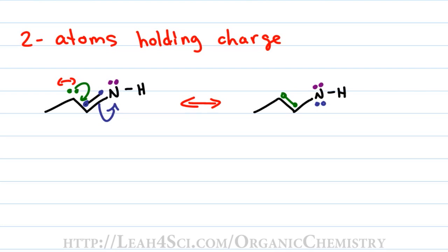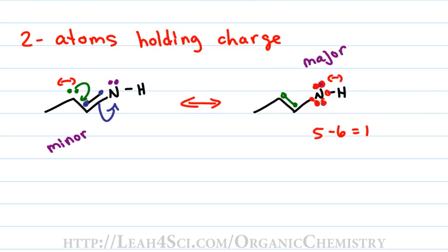Nitrogen has its bonds and electrons clearly visible, so we'll use the formal charge trick of 'should minus has.' Nitrogen should have five valence electrons; directly attached we have six. Five minus six is negative one, so the negative charge transferred to the nitrogen atom. In both situations we have a complete octet, but the choice is a negative on carbon versus a negative on nitrogen. Nitrogen is slightly more electronegative than carbon, making it slightly happier and more stable holding that negative charge. Therefore, the structure on the right is the major contributor and the structure on the left is the minor contributor, due to the electronegativity of the atom holding the charge.